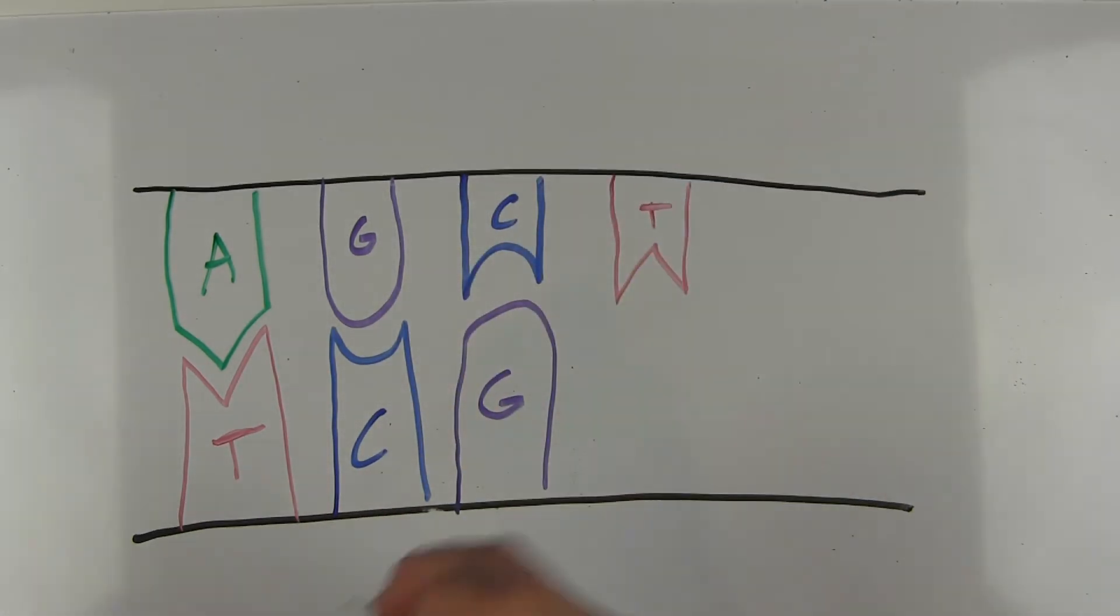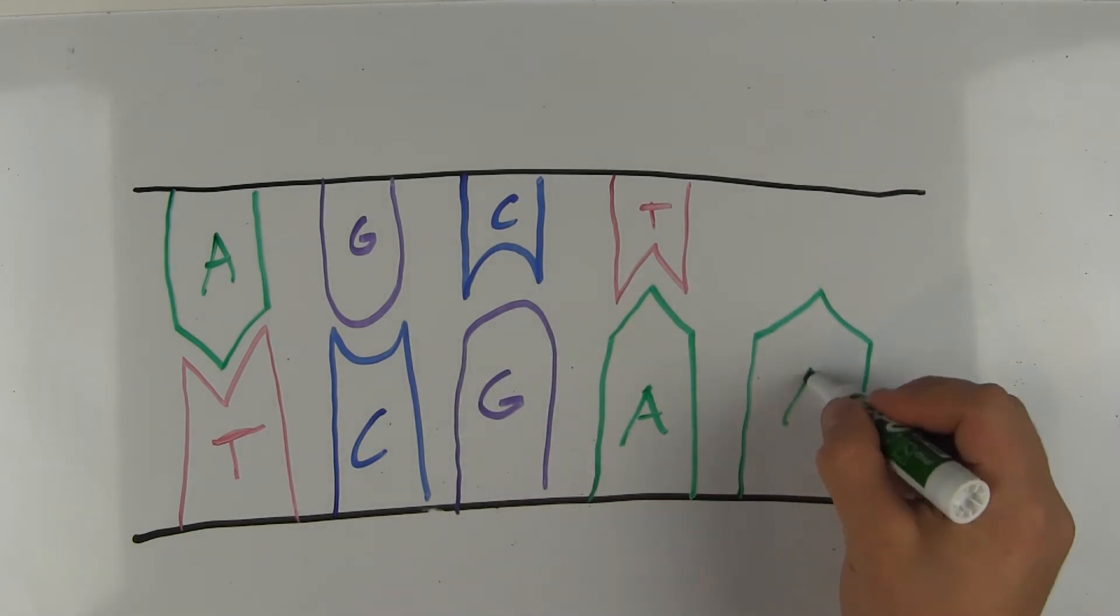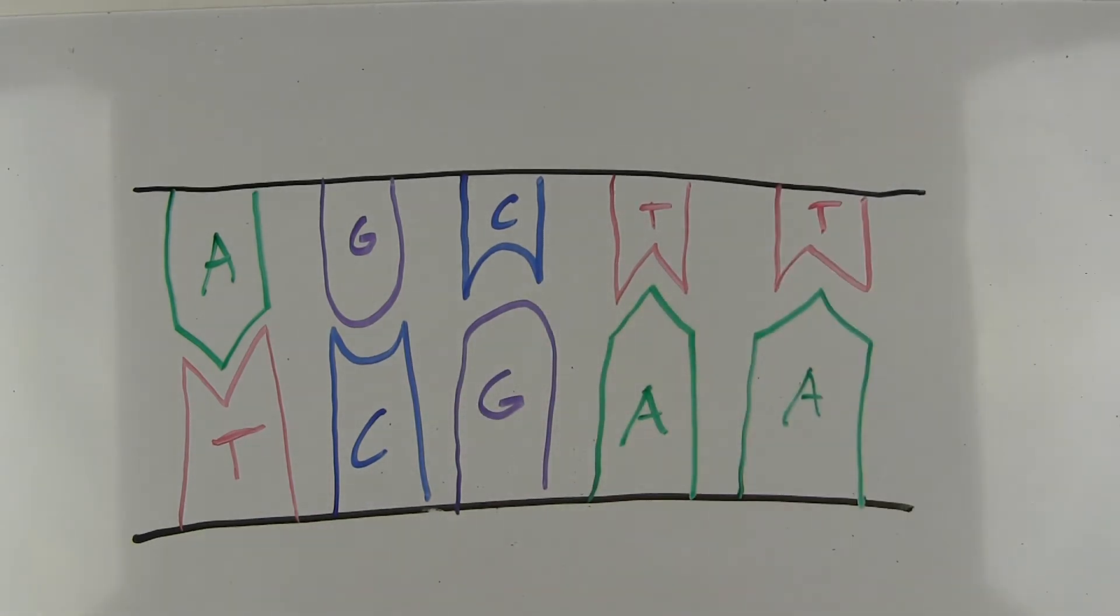Guanine, cytosine, adenine, and thymine are known as nucleotides, and together they can form millions of different combinations which serve as the blueprint for living things.